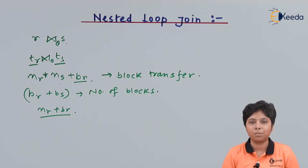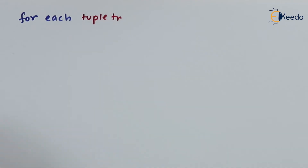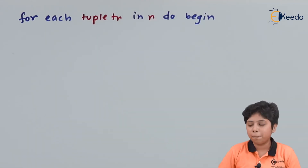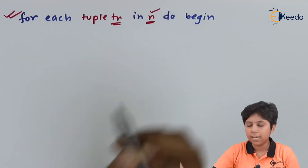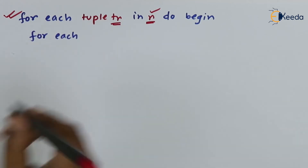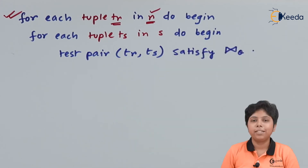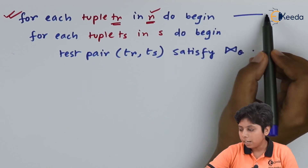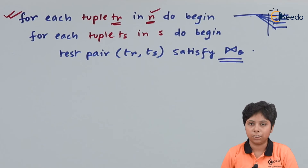Now let us see how to perform a nested loop join inside an SQL query. For each tuple tr that belongs to relation r, we begin the outer loop — here r is the outer relation. Then for each tuple in the inner relation s, we consider each tuple in s. Every tuple from r is matched with every tuple from s to check the theta join condition.